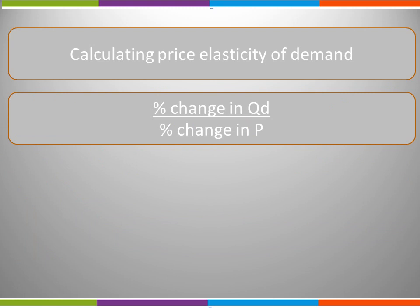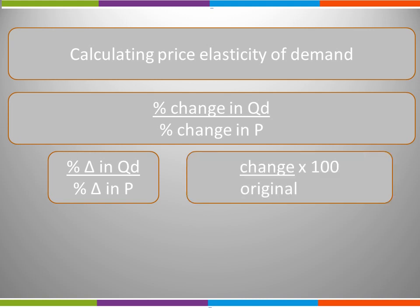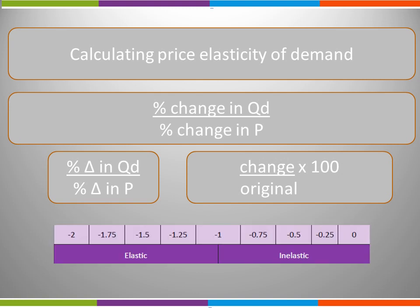So how do we calculate the PED? The formula is percentage change in quantity demanded over percentage change in price. We can also express this using the triangle symbol to represent change. We calculate change by the change divided by the original multiplied by 100. The result of this will give us the coefficient.